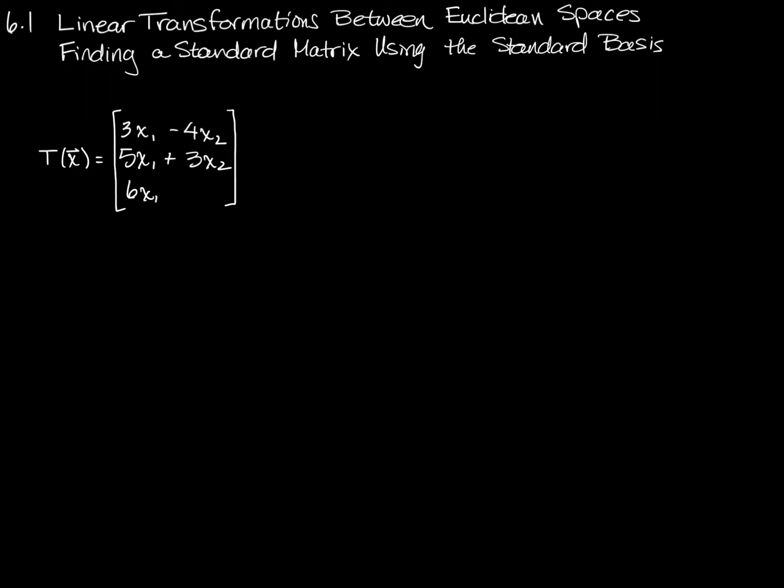In the last video we took a look at finding the standard matrix for a transformation by essentially undoing matrix multiplication. And here what we're going to do is take a look at a slightly different approach to this.